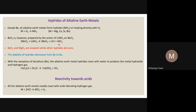AlCl₃ is a Lewis acid, and it has certain similarity with BeCl₂ in some cases, which we will see later. So beryllium hydride and magnesium hydride are covalent, while the other hydrides — calcium, strontium, and barium hydrides — are ionic.